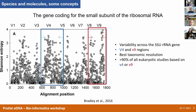If we take the full length of this SSU, you probably know that there are several variable regions named from V1 to V9, and also several conserved regions. As you can see in this Shannon entropy plot, there is more entropy in these variable regions, whereas the most conserved regions show less entropy. For metabarcoding, the regions we use are either the V4 or the V9 region.